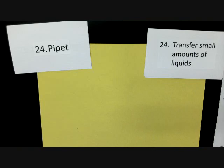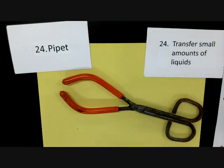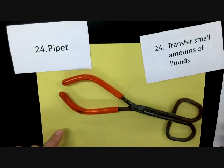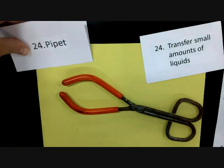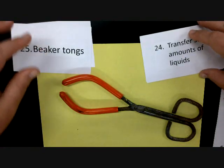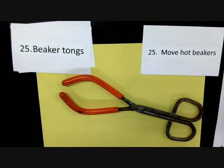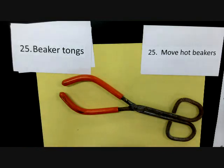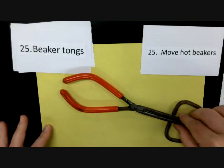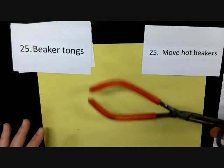We have one more set of tongs — we have a total of three sets of tongs, and this is the last and biggest one. What's different about it is it has a silicone covering on the end and a wider opening, because it is used to move beakers. They're called beaker tongs, and their purpose is to move hot beakers. In class we'll usually give you the option of using the hot hands or the beaker tongs — some people like one better depending on their hand size and the size of the beaker.